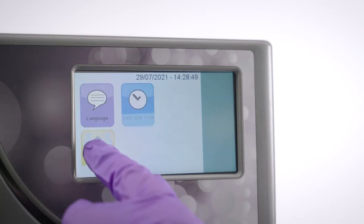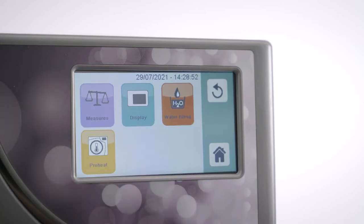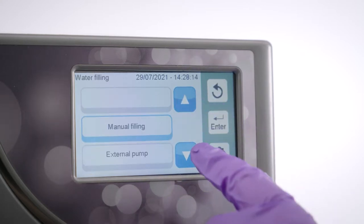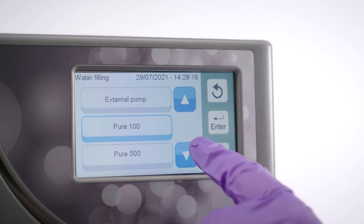Follow these simple steps to select the correct water filling setting. Select the settings icon, followed by preferences. Select the water filling icon, which will bring you to a list of manual and automatic filling options.